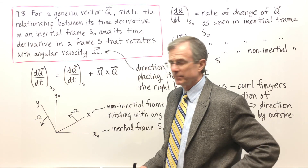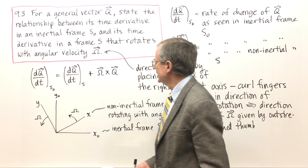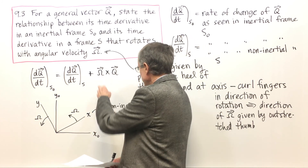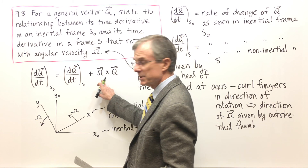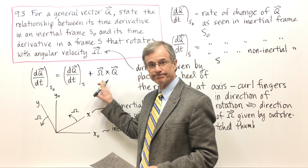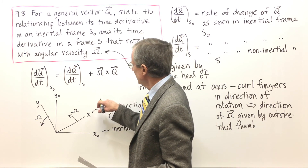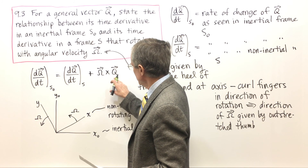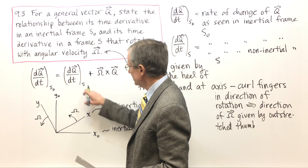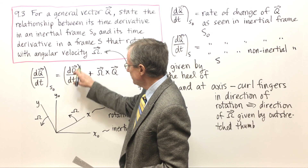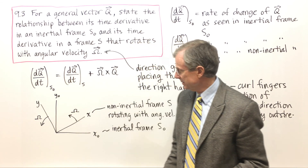Notice that the units work out for this equation, which is comforting. Omega has units of inverse seconds — radians per second are inverse seconds — so you have whatever units Q is in divided by seconds, which matches both sides of the equation.